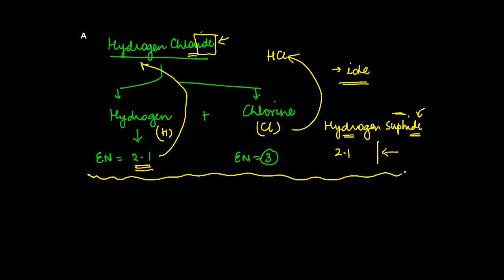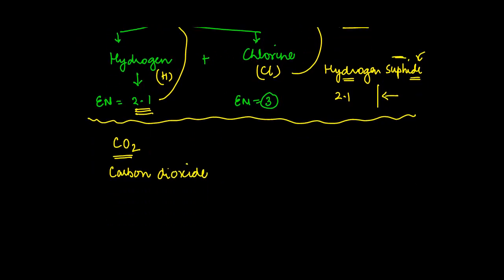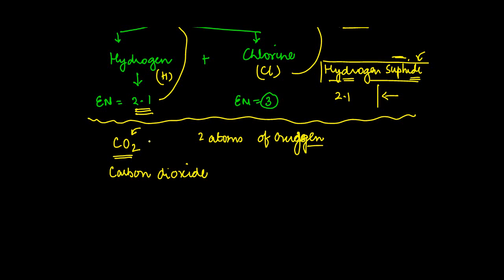One more rule you must know: whenever there are more than one atom of an element in a molecular compound, we indicate this with a prefix. The most common example is carbon dioxide — in this case there are two atoms of oxygen. The prefix 'di' means two.